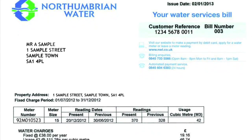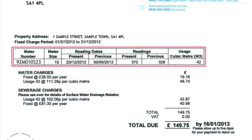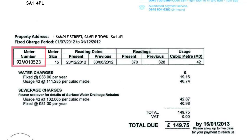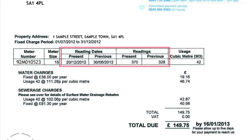If you have a water meter installed then your bill will have a section like this which details information about your meter. The meter serial number is totally unique. The meter size depends on the size of your water supply pipe and the volume of water we estimate you would use. The reading dates show the date we read the meter or when you provide us with a meter reading.